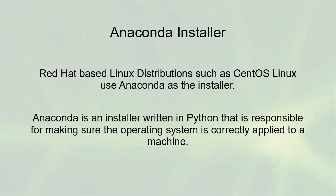When you're doing an installation, the first thing you come across is the Anaconda installer. Anaconda is just the name of the installer used by Red Hat based Linux distributions such as CentOS, so you'll find that lots of these distributions have an installation wizard that looks the same. Anaconda is an installer written in Python with some C parts as well, and it is responsible for making sure the operating system is correctly applied to the machine, with bootloaders and everything else in place. Anaconda works great some of the time, but sometimes it fails — more often than the actual Linux distribution will fail once it's running, so you may have to start over.